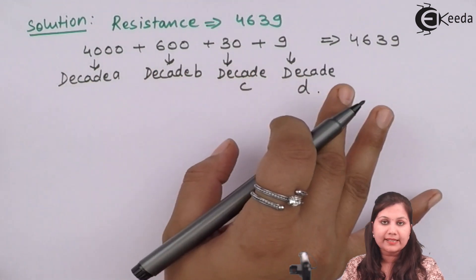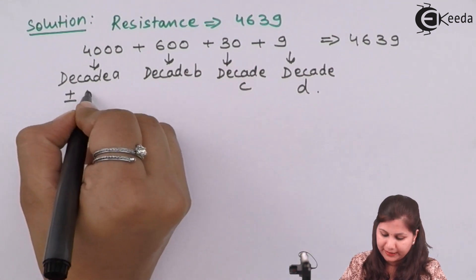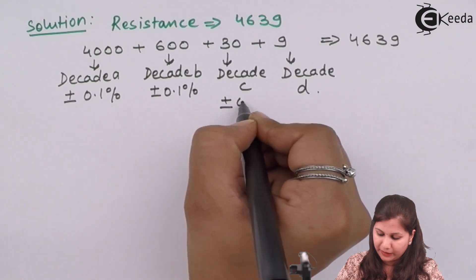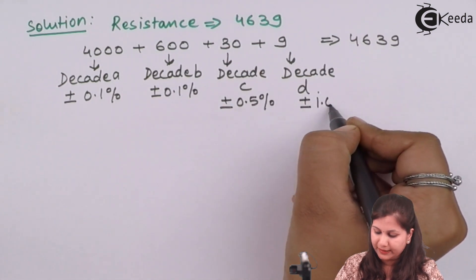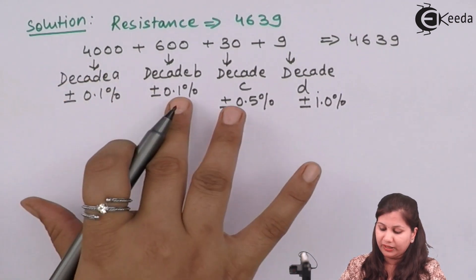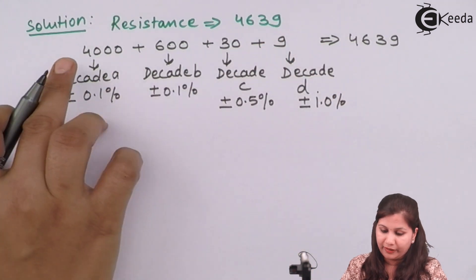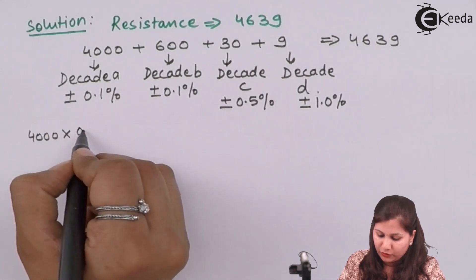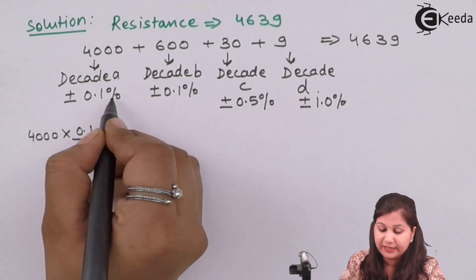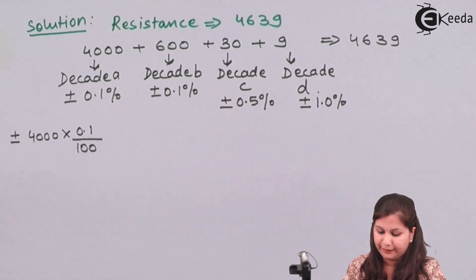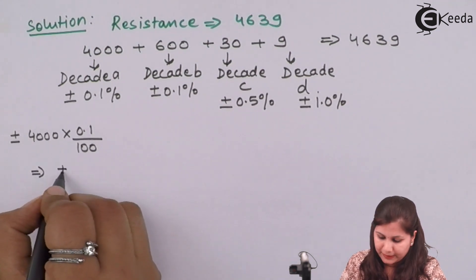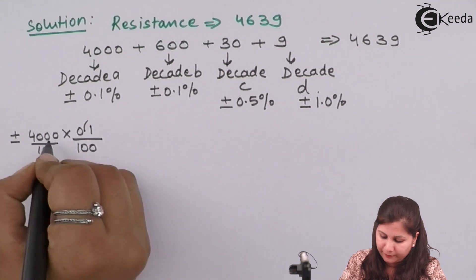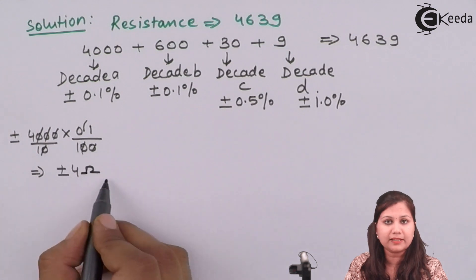The error in each decade is: decade A has ±0.1%, decade B has ±0.1%, decade C has ±0.5%, and decade D has ±1%. For decade A reading 4000: error = 4000 × 0.1/100 = ±4 ohms.